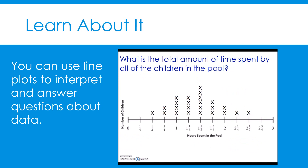Our last question says: what is the total amount of time spent by all of the children in the pool? This is different from the question that asked for the total amount of data points. Each X represents a different amount of time depending on where it's sitting in the line plot. In order to answer the question, we need to determine what each X represents and then add them all together. If you have scratch paper and would like to pause and solve this on your own and then come back and check, feel free.